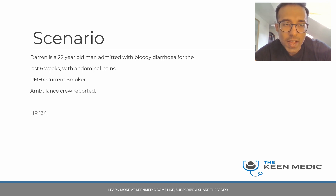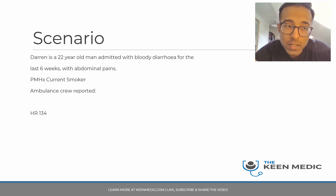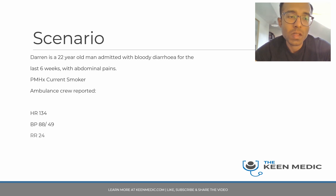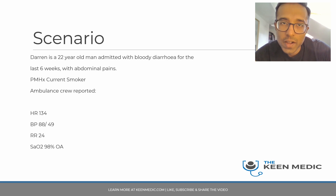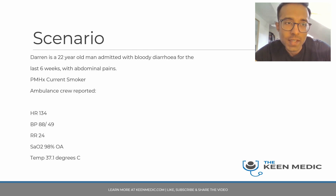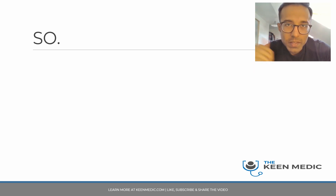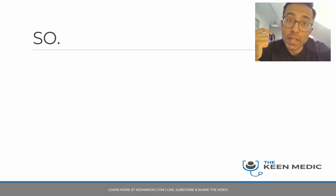The ambulance crew report his heart rate is 134 — quite high. Blood pressure is low at 88 over 49, so he's haemodynamically compromised. Respiratory rate is 24 and sats are fine at 98% on air. Temperature is 37.1. Basically, he is unwell and we need to act fast. This is an unwell patient with bloody diarrhea, and he's a smoker.